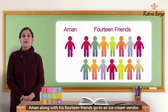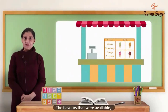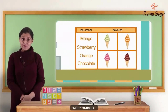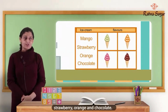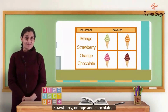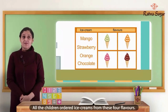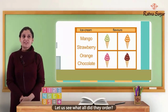Aman along with his 14 friends go to an ice cream vendor. The flavors that were available were mango, strawberry, orange, and chocolate. All the children ordered ice creams from these 4 flavors. Let us see what all did they order.